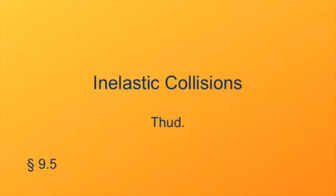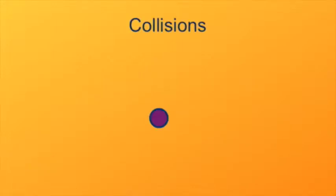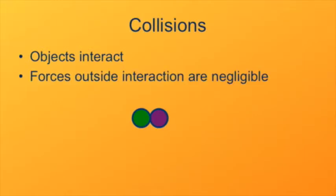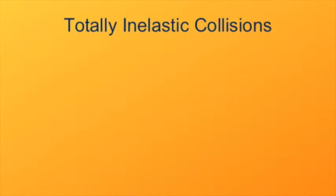The context in which conservation of momentum shows up most prominently is in collisions. Collisions are when two objects interact and we can neglect the forces from outside their interaction. We can treat interactions as collisions even if the objects never actually touch each other — all that matters is the equal and opposite force pairs from the interaction. It's convenient to classify collisions into several different types, as the different types mandate how we can treat them mathematically.